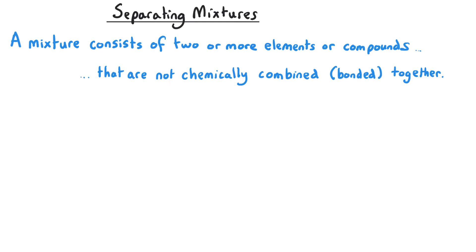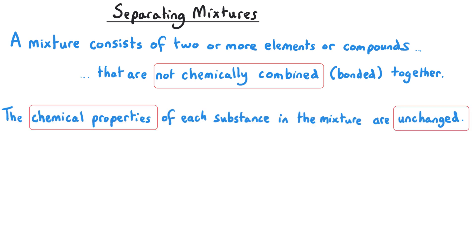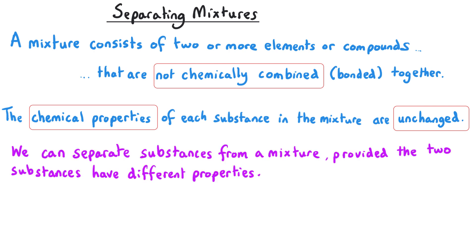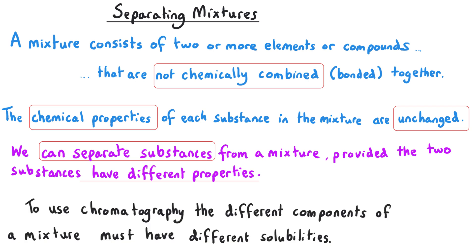Since the components of a mixture aren't chemically combined together, the substances in the mixture retain their properties, and the chemical properties of each substance are unchanged. We can separate the substances out from a mixture provided that they have different properties. In chromatography, the property we use to separate the different components is their solubilities — if substances have different solubilities we can use chromatography to separate them.